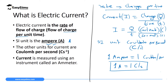Current is measured using an instrument in a lab called an ammeter. If you find an ammeter in the lab, it has a scale and the letter capital A in the middle.